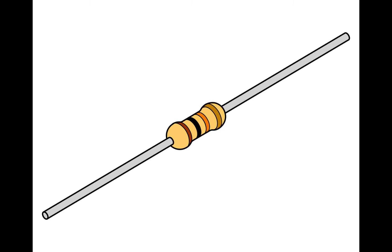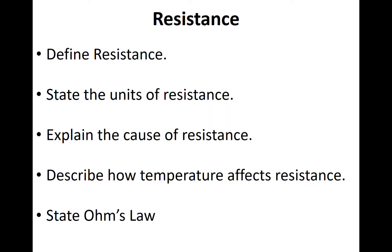Therefore, the slower the current will flow. That means you will have less current. By the end of this lesson we should be able to define resistance, state the units of resistance, explain the cause of resistance, describe how temperature affects resistance, and finally state Ohm's law.